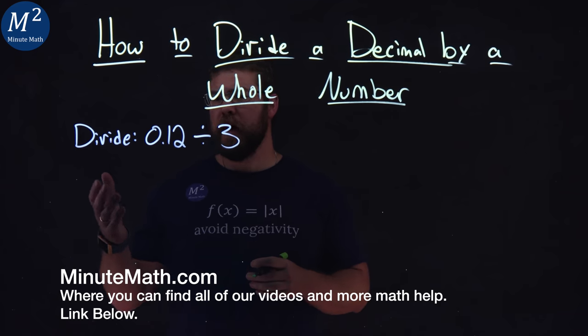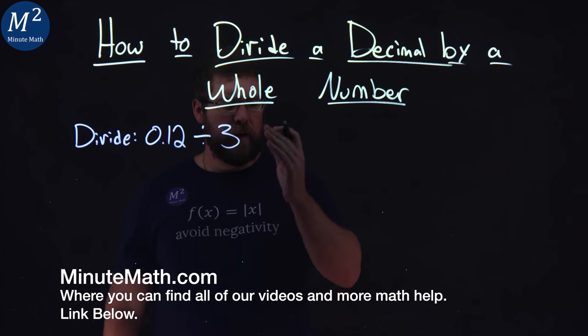We're given this problem here. Divide 0.12 divided by 3.